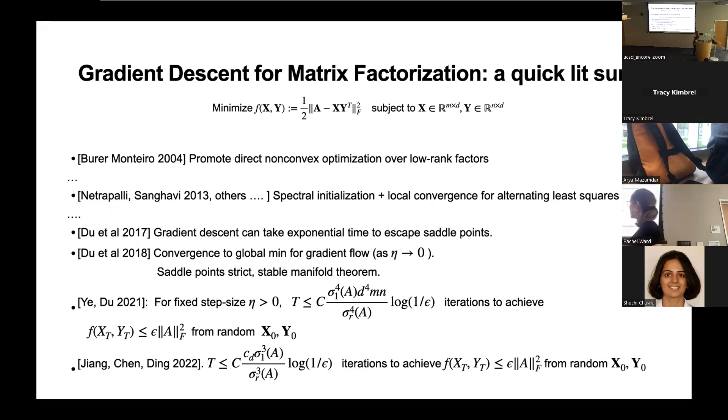In 2018, they started to analyze convergence for gradient flow, which is the limit as the step size goes to zero. Because then you get differential equations and the gradient flow, you can invoke the stable manifold theorem and say really nice, mathematically elegant results about convergence, but not convergence rates. So then in the last couple of years, people started looking at gradient descent with fixed step size eta to try to really quantify the iteration complexity for the matrix factorization problem in particular. These authors got an iteration complexity related to the condition number of A to the fourth power times some dimension factors. And then more recently, these authors improved that condition number to the third power. This is starting from a random initialization, X naught, Y naught, just Gaussian random matrices.